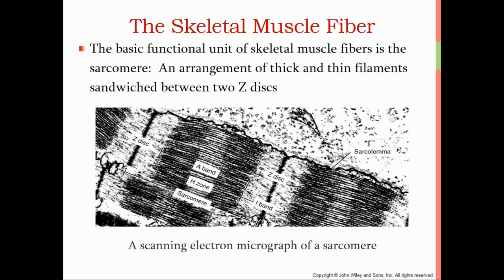The basic functional unit of a skeletal muscle fiber is the sarcomere — it goes from Z disk to another Z disk. An arrangement of thin and thick filaments sandwiched between two Z disks is a sarcomere. This is an actual photograph taken with a scanning electron microscope. These things are measured in nanometers, so you need a very powerful microscope to see them. Here are the thin filaments — you can tell because it's not as dark — and this is the area of thick filament. You'll notice areas labeled A band and H zone, which we'll get to in a moment.